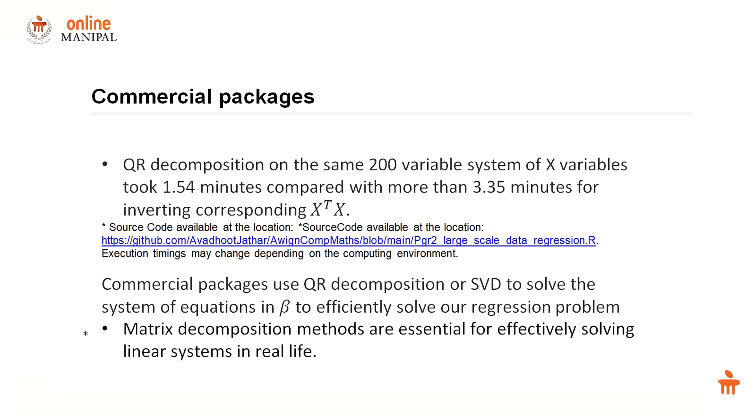QR decomposition on the same 200 variable system took about 1.54 minutes compared to 3.35 minutes to invert the matrix x prime x transpose x. So commercial packages which are equipped to work for larger datasets typically use QR decomposition or singular value decomposition.